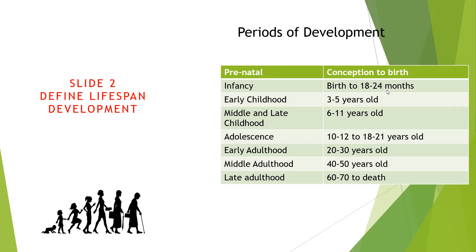In terms of periods of development, most theorists call prenatal the period from conception to birth, infancy from birth to 18 to 24 months, early childhood from 3 to 5 years, middle and late childhood from 6 to 11 years, and adolescence from approximately 10 to 21 years. Early adulthood spans 20 to 30 years old, middle adulthood 40 to 50 years old, and late adulthood beyond that.